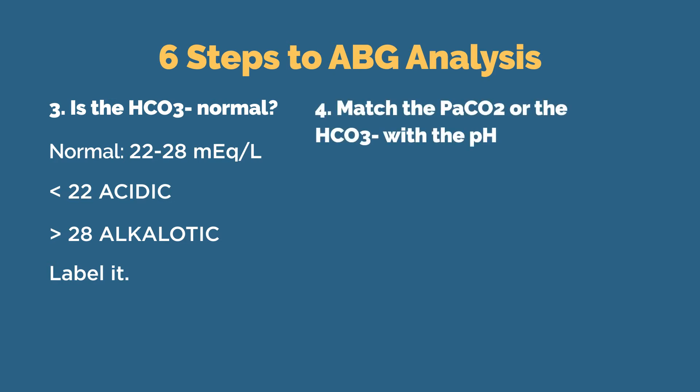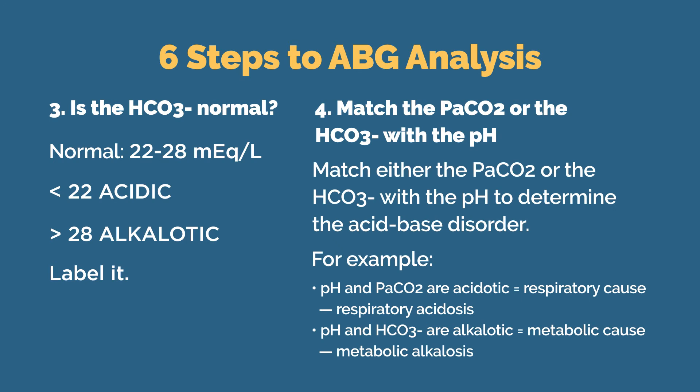Now onto the fourth step. Here we need to match either the CO2 or the bicarbonate with the pH to determine the primary source of pH abnormality. For example, if in steps one through three you noted that both the pH and the CO2 values matched — both were labeled acidic — you know that the primary source of pH abnormality is respiratory in nature. In this case, it would be a respiratory acidosis. However, if the pH and the bicarbonate values matched, both labeled as alkalotic, you know that the primary source is metabolic in nature — in this case, a metabolic alkalosis.